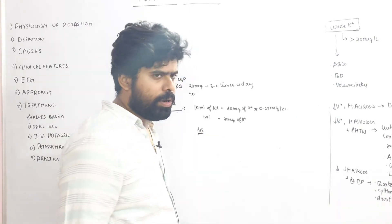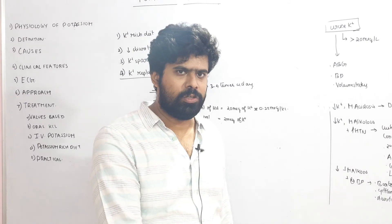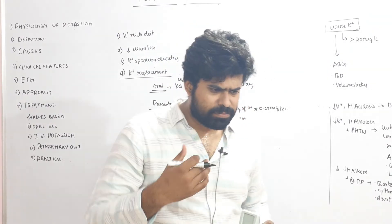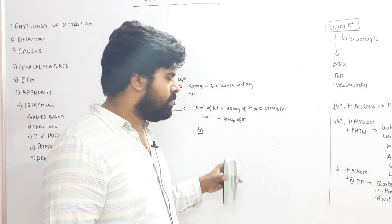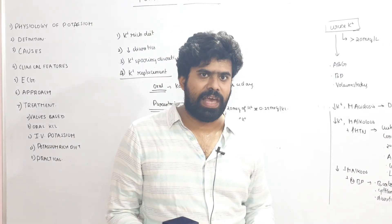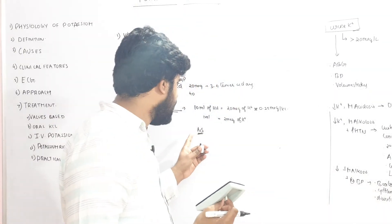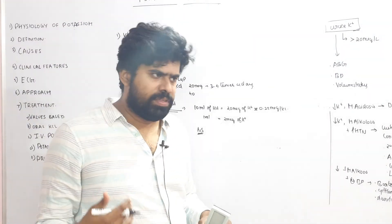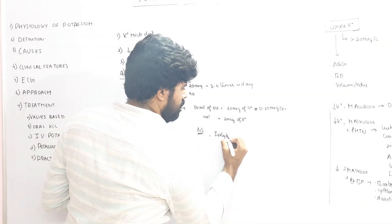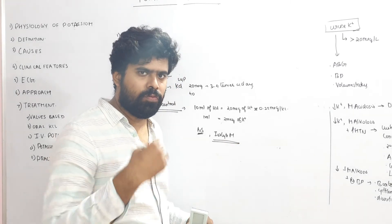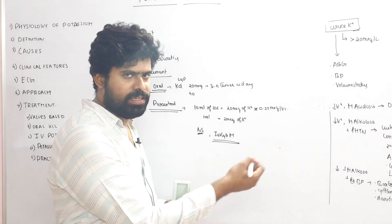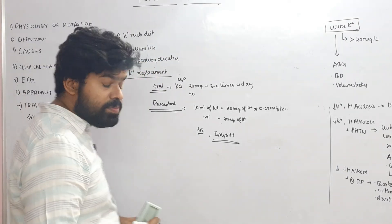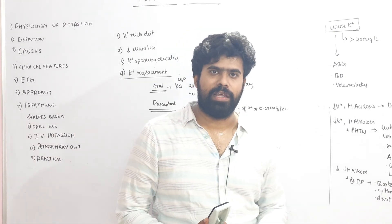Potassium correction should preferably be given in normal saline and administered slowly — 40 milliequivalents over four hours, with no more than 10 milliequivalents per hour. Dextrose-containing solutions can worsen alkalosis and should be avoided. Correcting metabolic acidosis with sodium bicarbonate can worsen hypokalemia. Isolyte-M already contains high amounts of potassium, so additional KCl is not needed in such fluids. Always use normal saline for KCl correction. This concludes the discussion on hypokalemia; next we will deal with hyperkalemia.